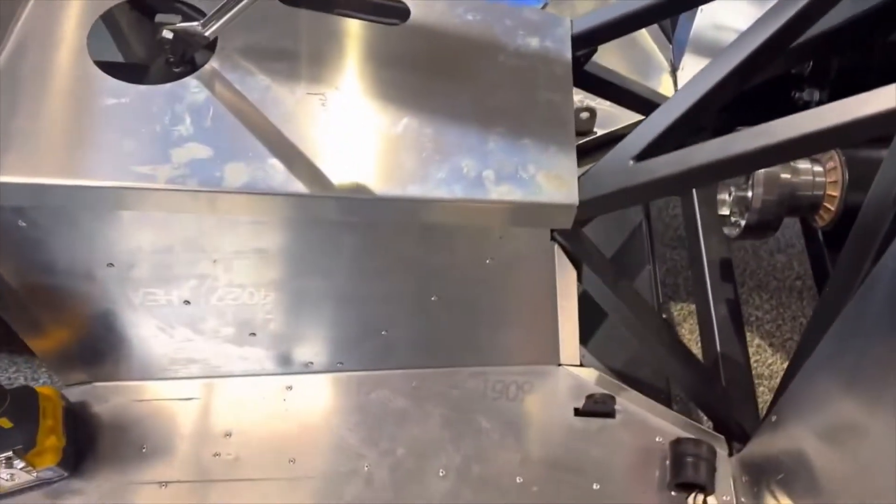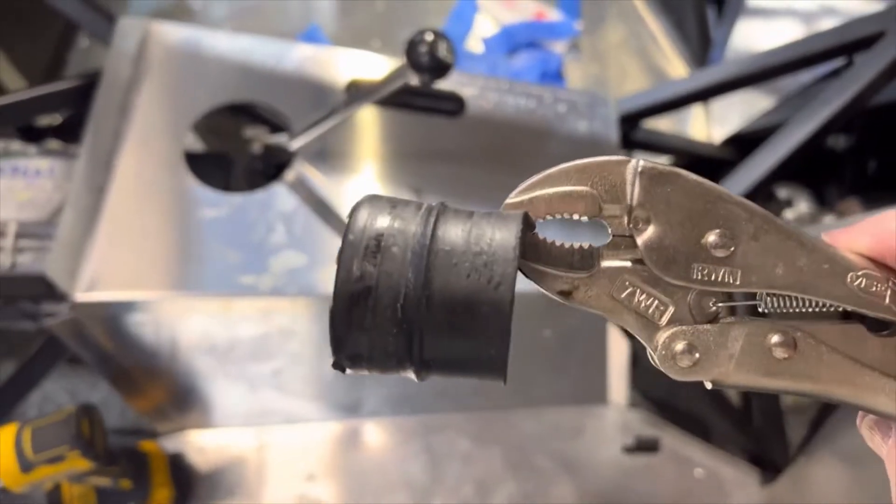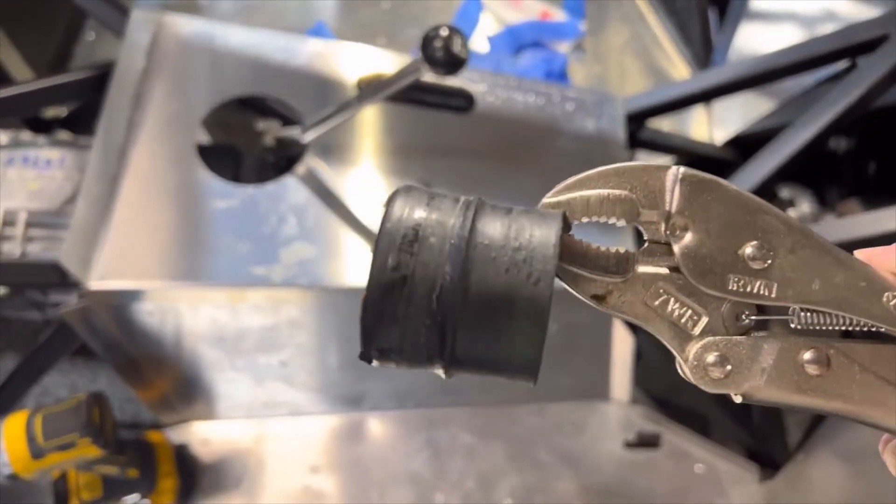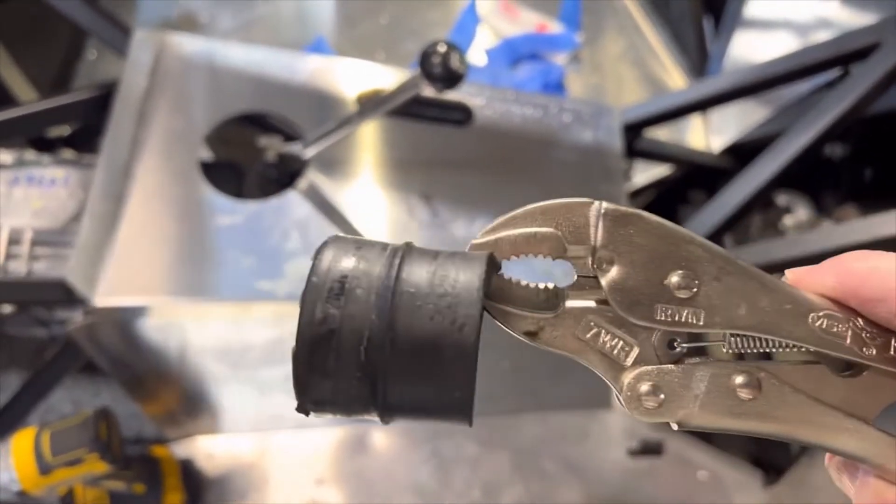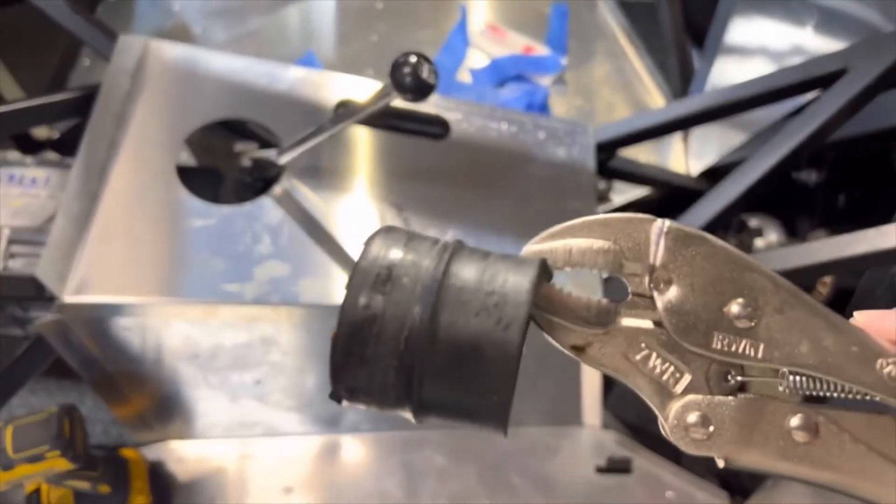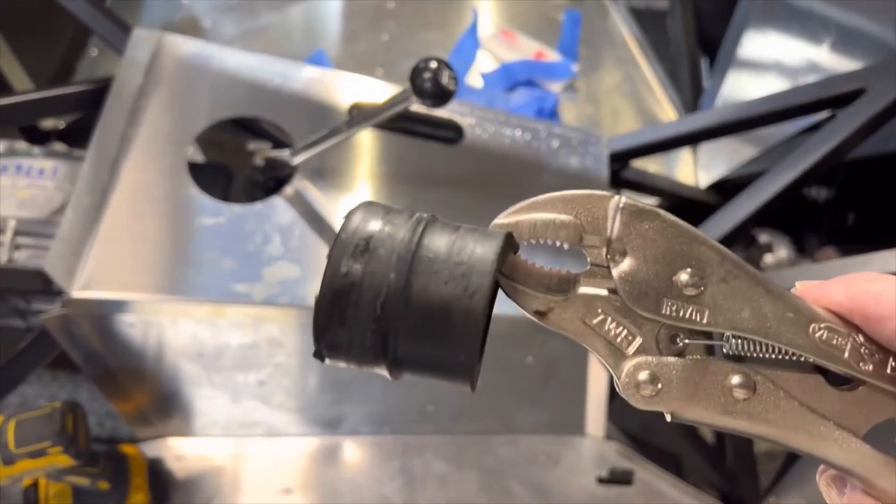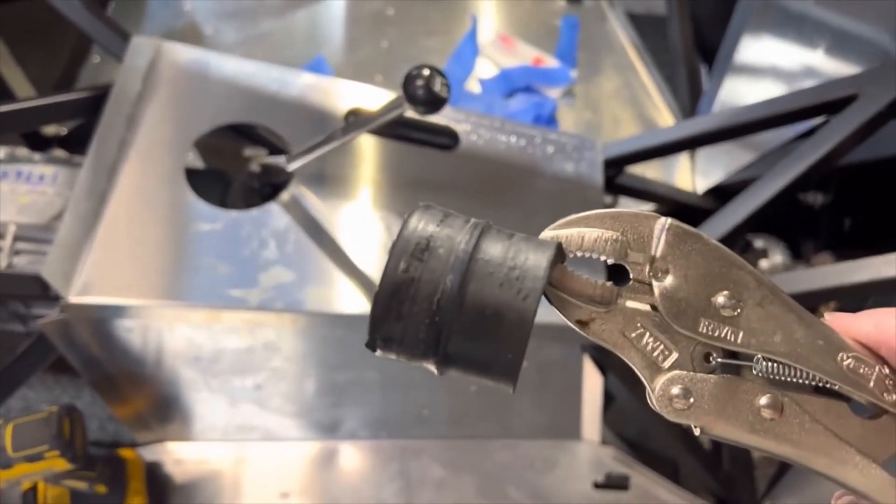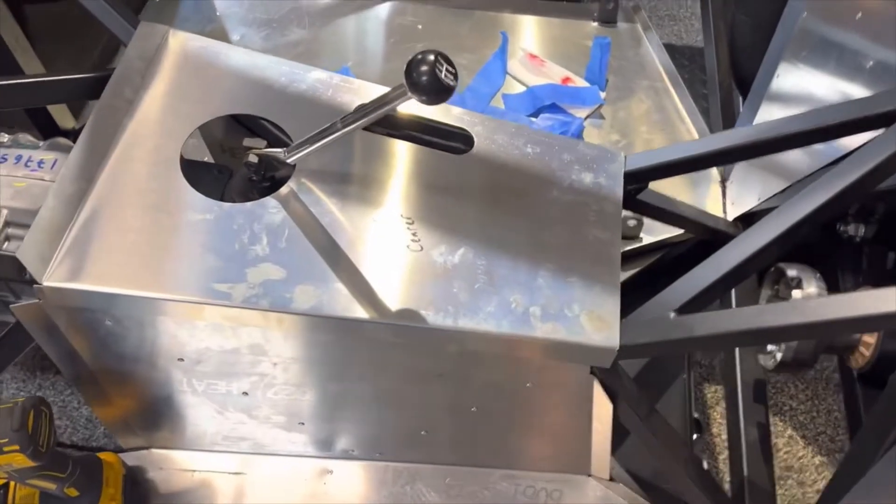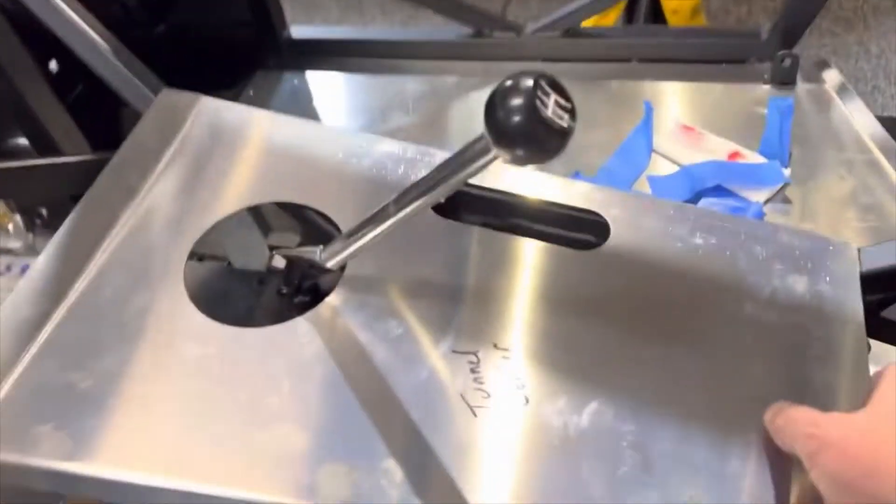By the way the TKX came with this plug in the end and the instructions said very clearly do not remove it, just push it in. Because they worry you would damage the rear seal on the transmission if you tried to pull it out. But I couldn't push it in for anything. I even tried lubing it up a little bit. So I just very carefully pulled it out. I'm sure I didn't damage that rear seal.